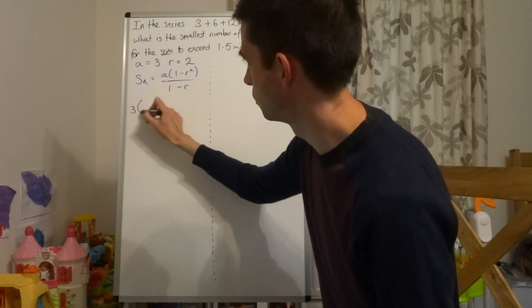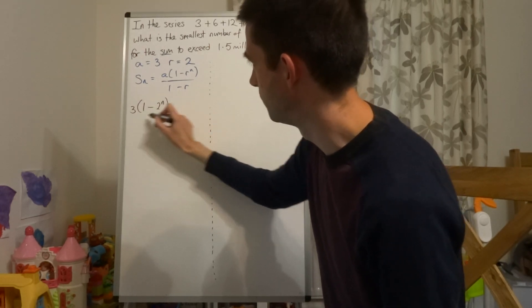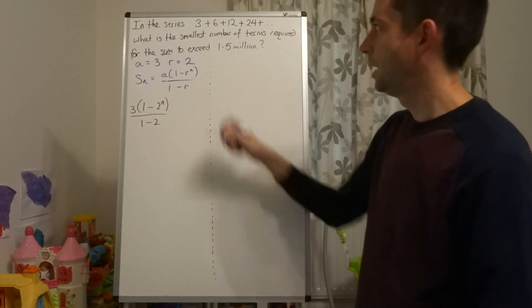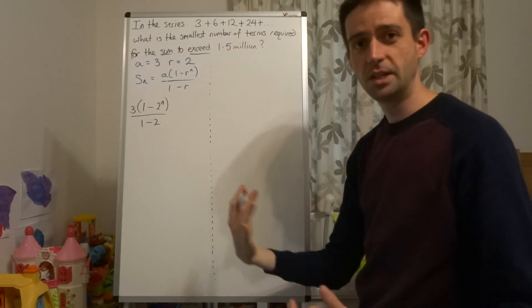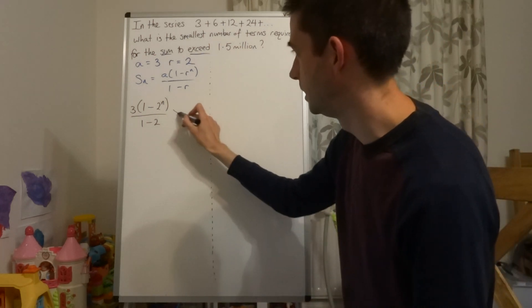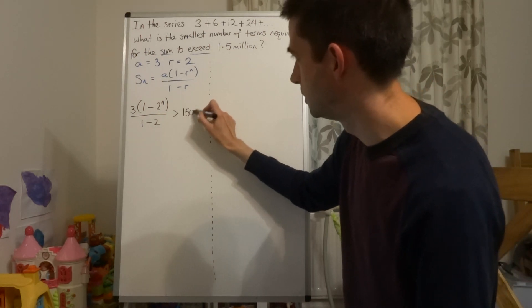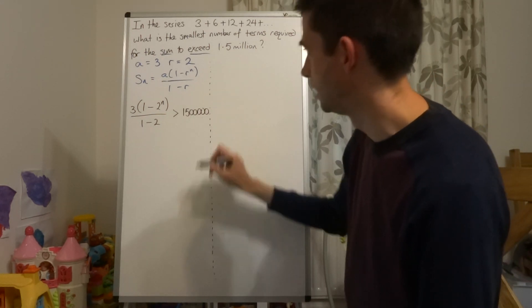So a is 3, 1 minus 2 to the power of n over 1 minus 2, exceed greater than, more than, so the inequality symbol is going in this direction initially, 1.5 million, so 1, 5, and then 5 zeros.